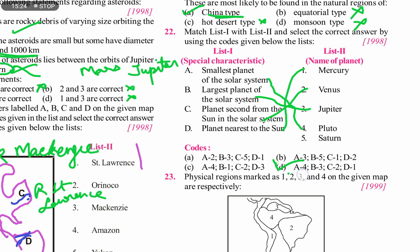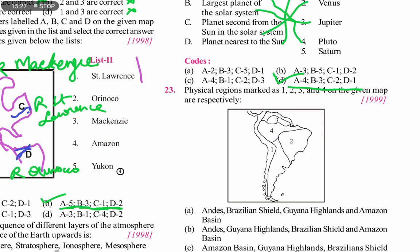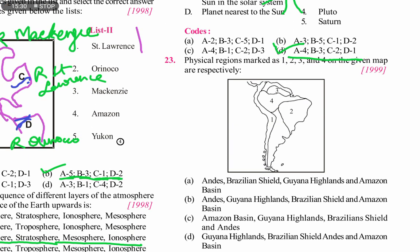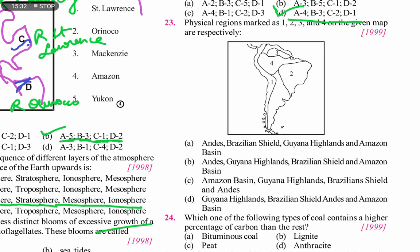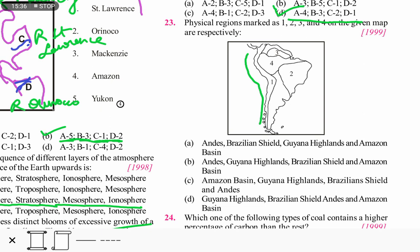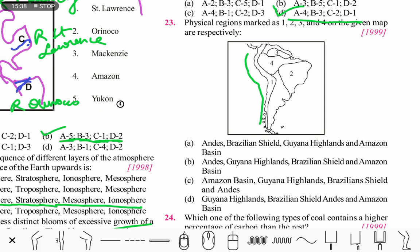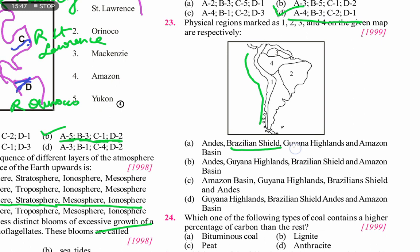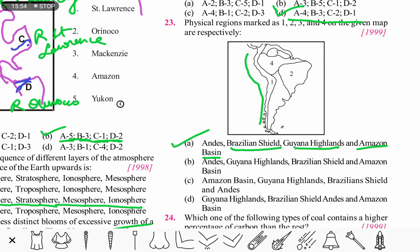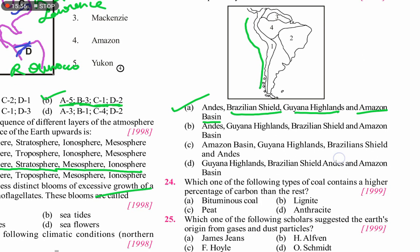The next question shows physical regions labeled 1, 2, 3, 4 on a map of South America. Region 1 depicts the Andes. Region 2 covers the Brazilian Highland. Region 3 is the Guiana Highlands. Region 4 is the Amazon Basin. Option A is the correct answer.